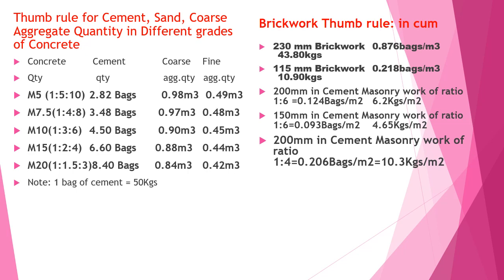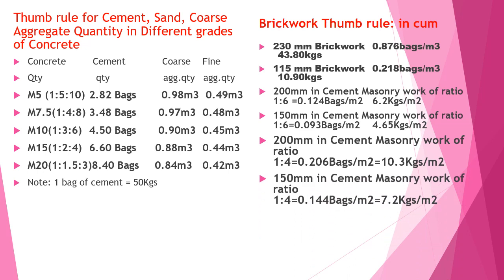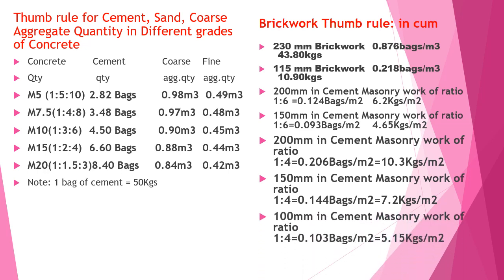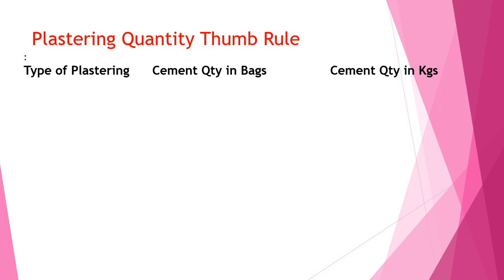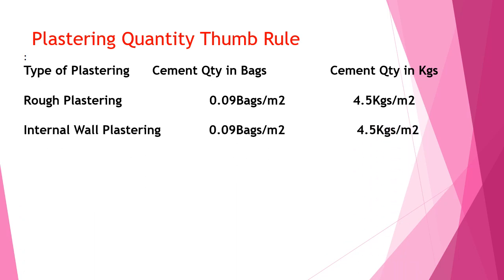For 150 mm cement masonry work at ratio 1:6, 6.6 kg per m² is required. For 150 mm cement masonry work at ratio 1:4, 0.144 bags per m² (7.2 kg per m²) is required. For 100 mm cement masonry work at ratio 1:4 and 1:5, approximately 0.103 bags per m². For 12 mm cement plaster at ratio 1:5, approximately 0.103 bags per m² (2.4 kg per m²) is required.